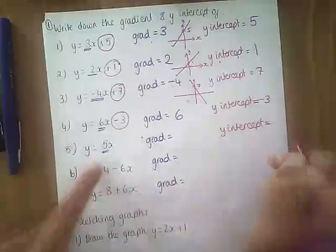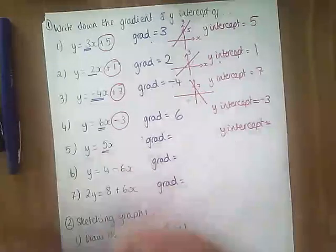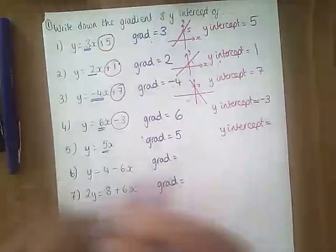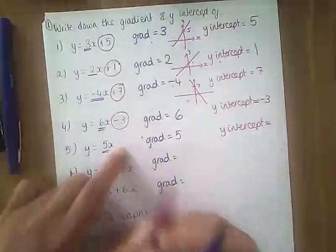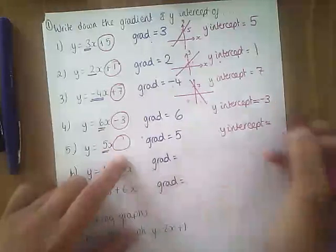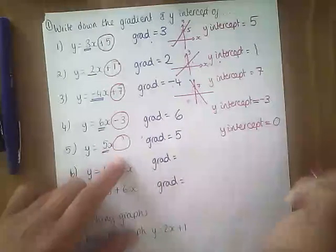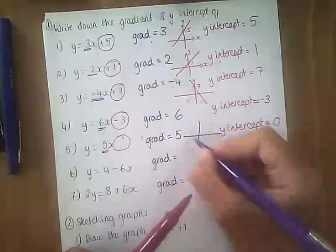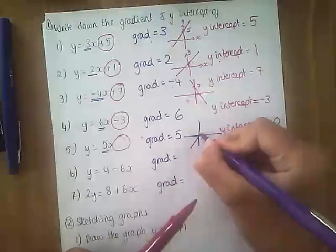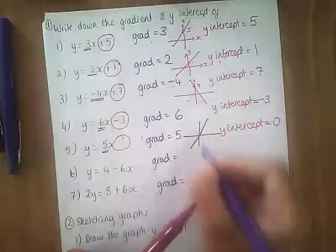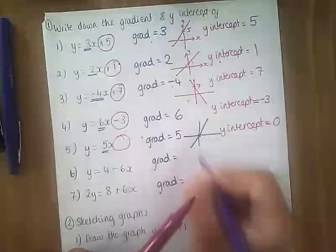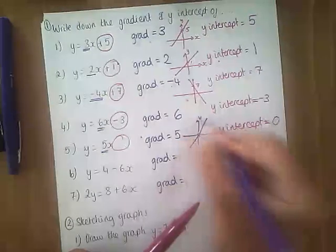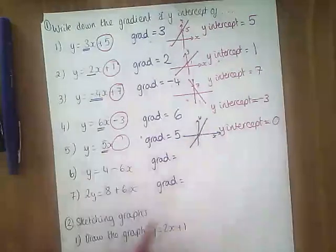Question 5: y equals 5x. The number in front of x is 5, so it's got a gradient of 5. What's its y-intercept? What's on the end? Well, it's 0. So what that means is it's quite steep and it crosses at 0, 0 — it goes through the origin. Just be aware of that — that's what y equals 5x means.